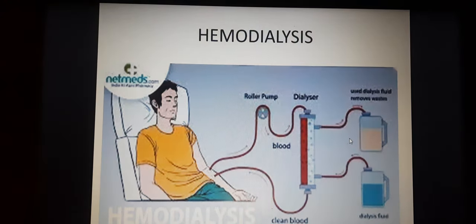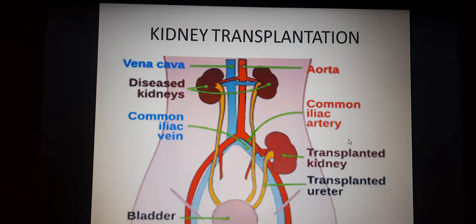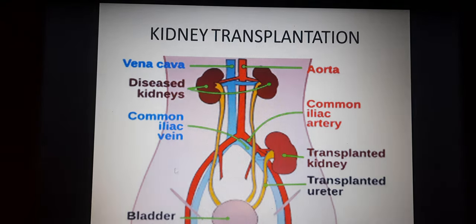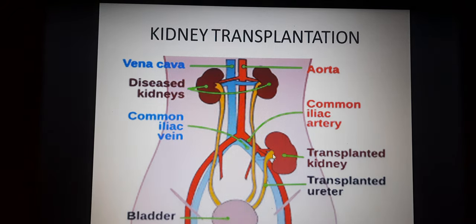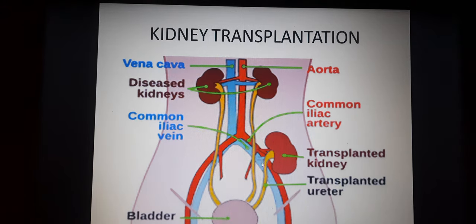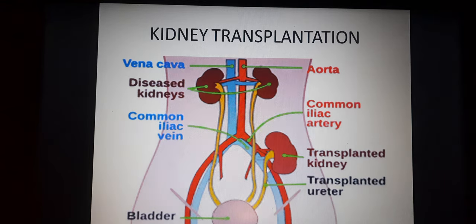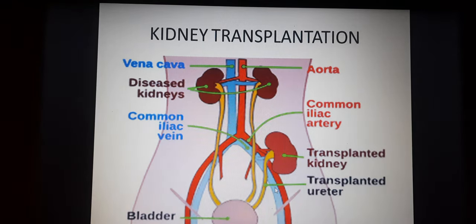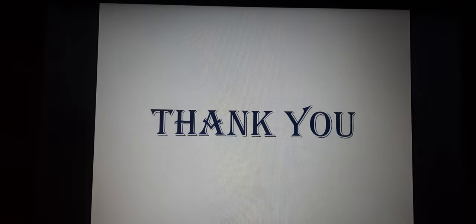Kidney transplantation: if both kidneys of a patient are not working, a donor provides one kidney. The donor kidney is attached with another duct, joined to blood vessels, and ultimately connected to the bladder. This is called kidney transplantation.